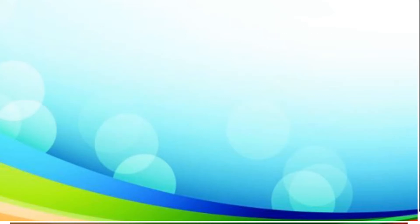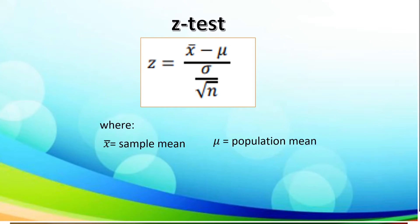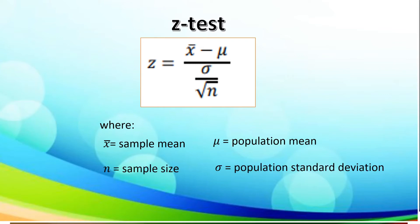Now let us discuss the formula for Z-test. Z is equal to x-bar minus mu, divided by sigma over the square root of n, where x-bar is the sample mean, mu is the population mean, n is the sample size, and sigma is the population standard deviation. Remember, Z-test should only be used if the given sample is greater than or equal to 30.